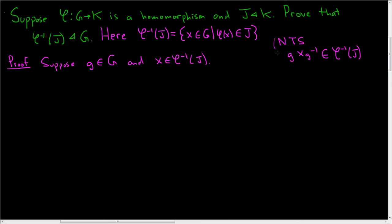And we can expand on this. It might make things a little more clear. So what would this mean? This would mean that φ(gXg⁻¹) is in J. Right? That's what it means for gXg⁻¹ to be in the inverse image of J. It means that φ(gXg⁻¹) is in J.